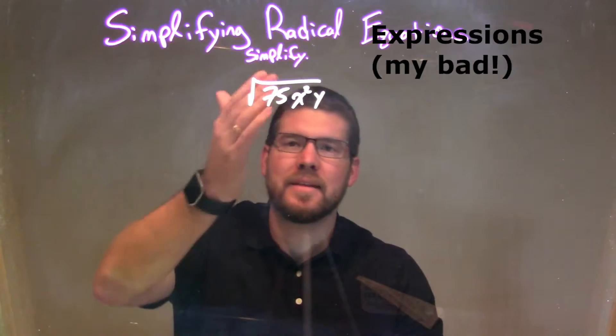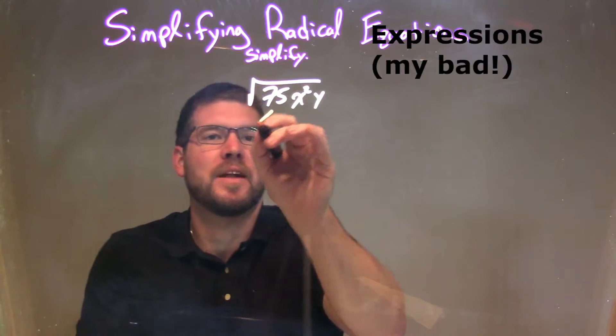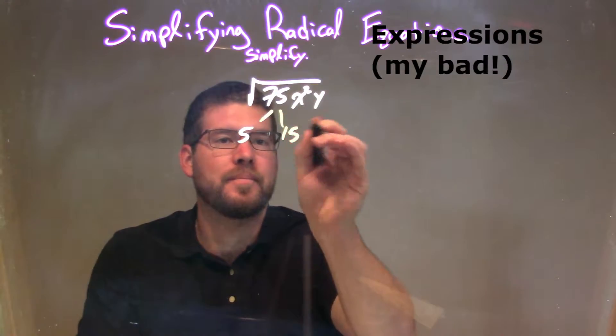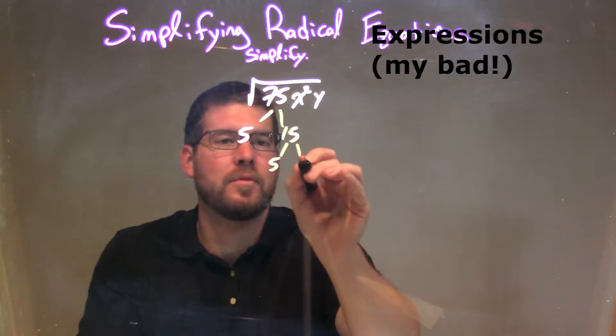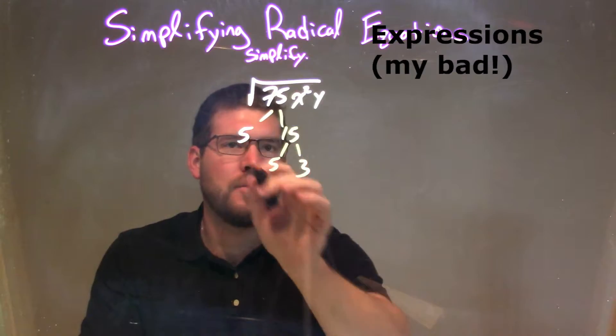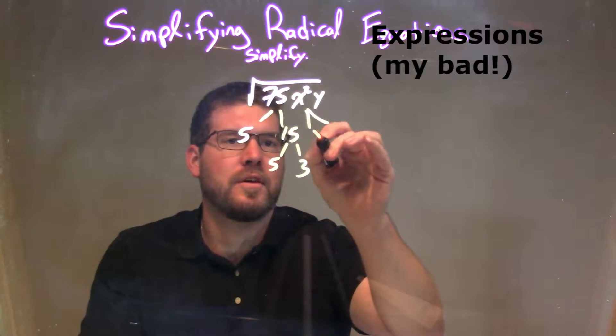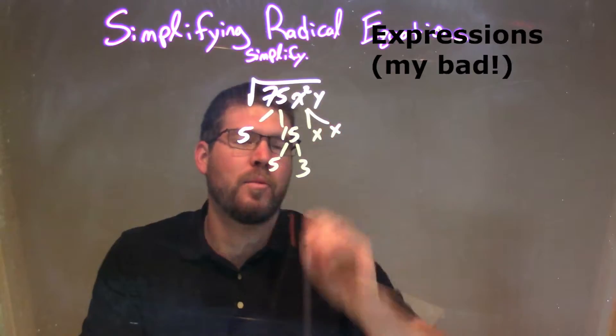75, I need to break that down into my prime factorization. That's 5 times 15. 15 is just 5 times 3. So I've broken down to all my prime numbers. x squared is just x times x, and y is just by itself.